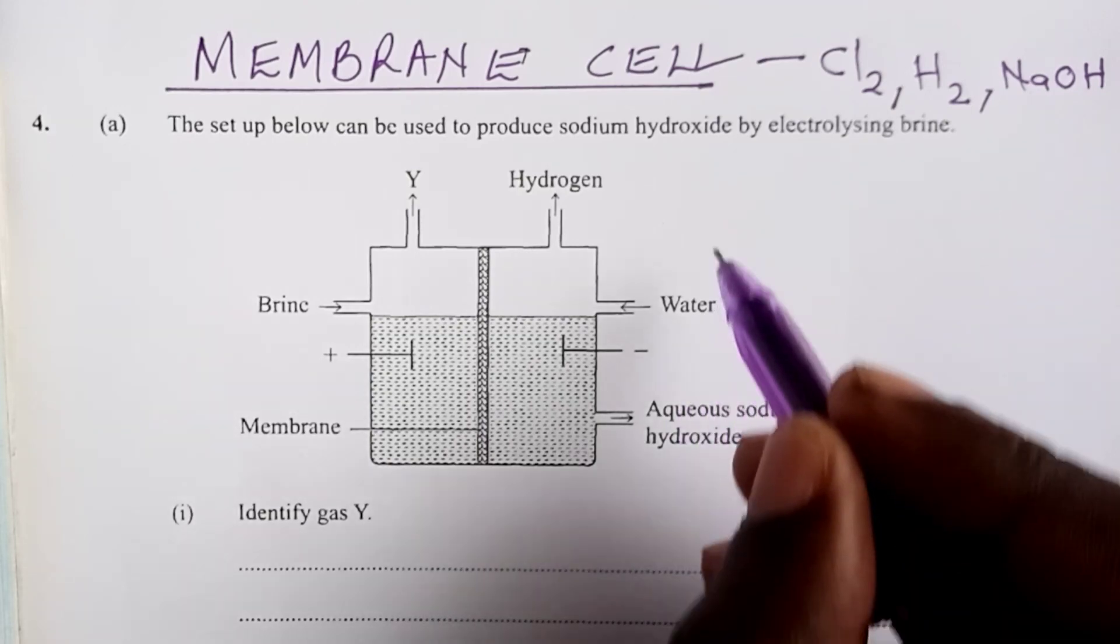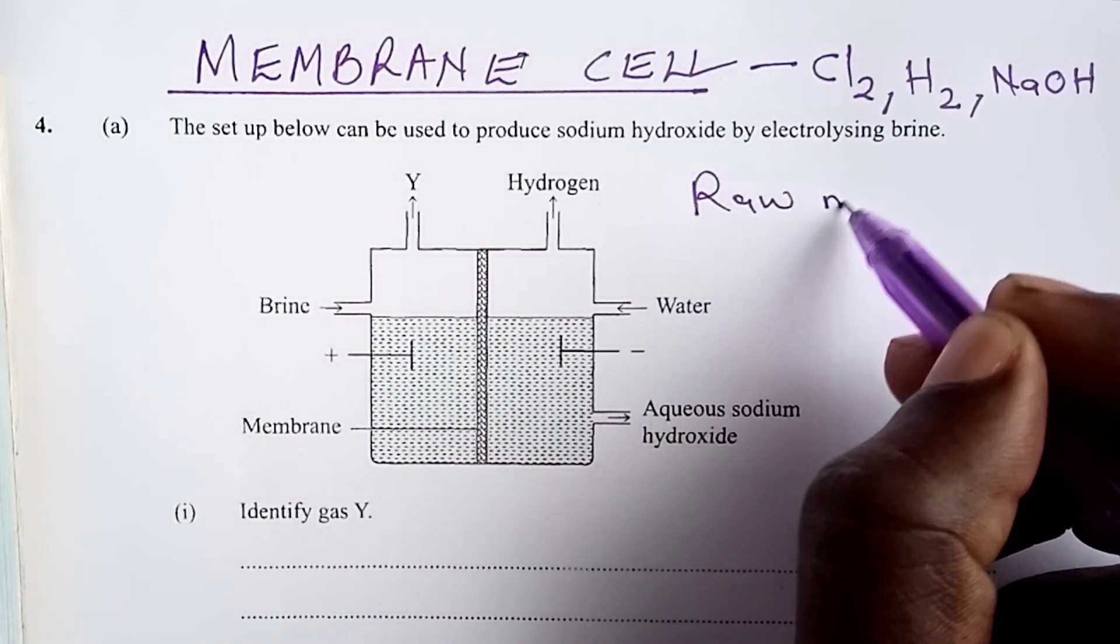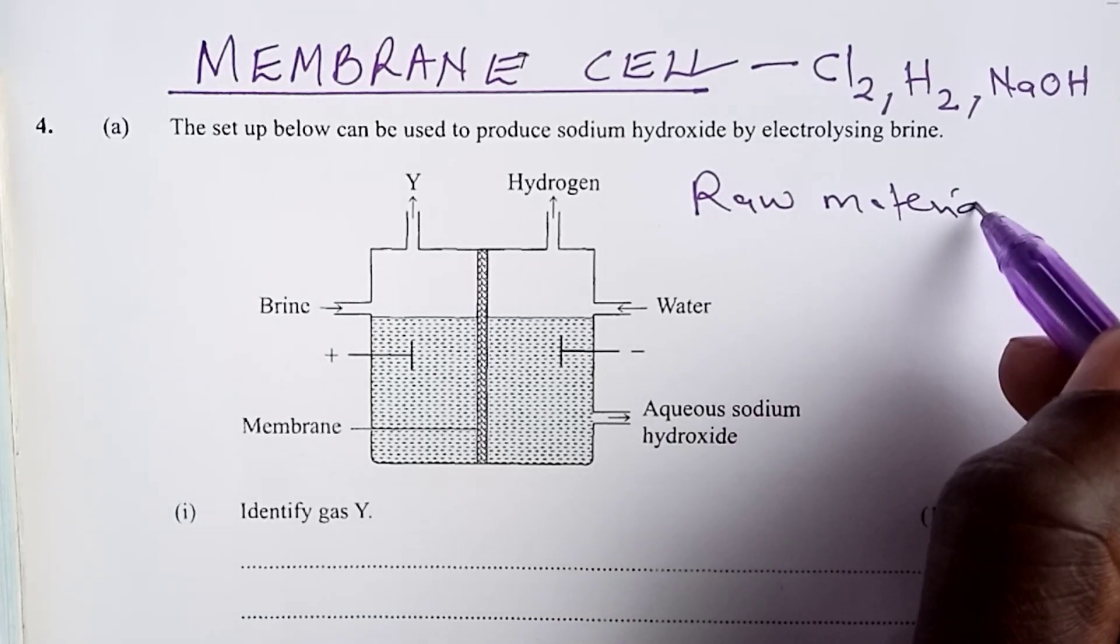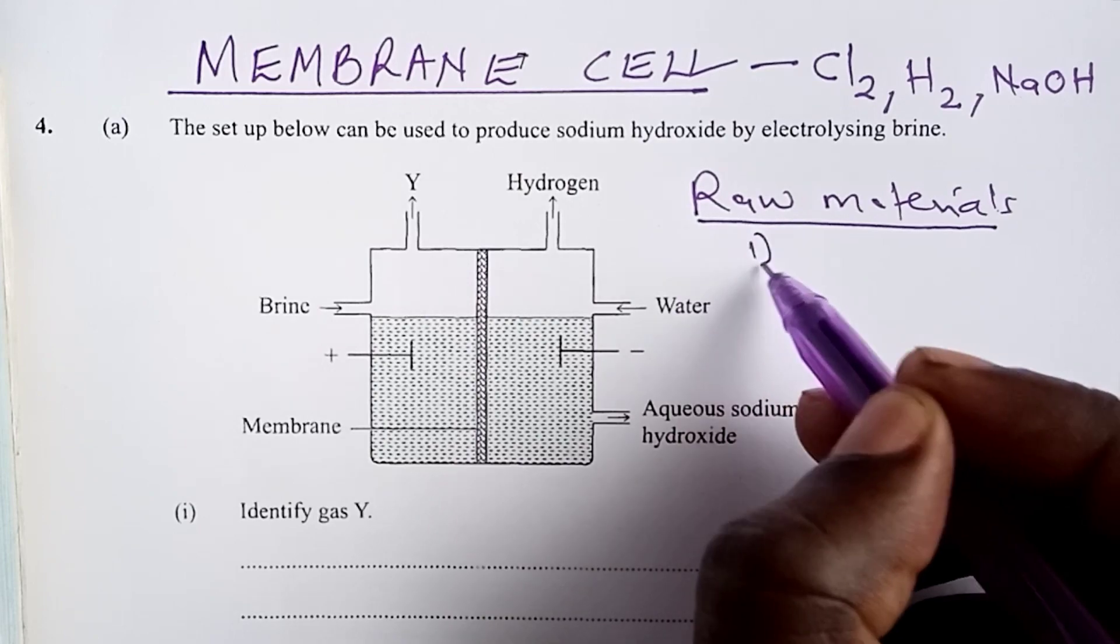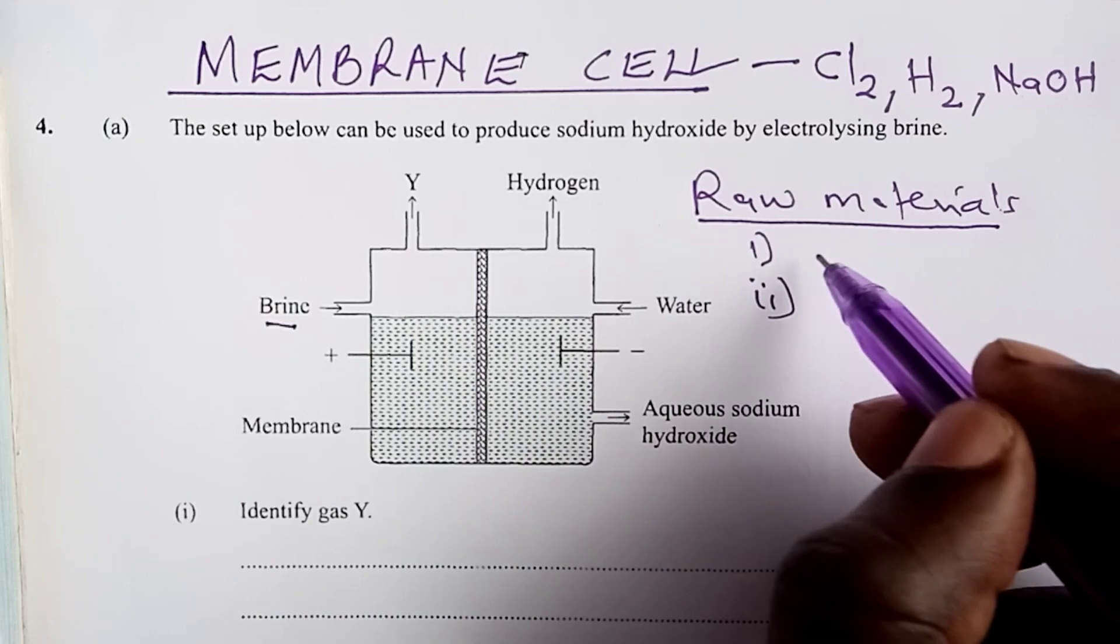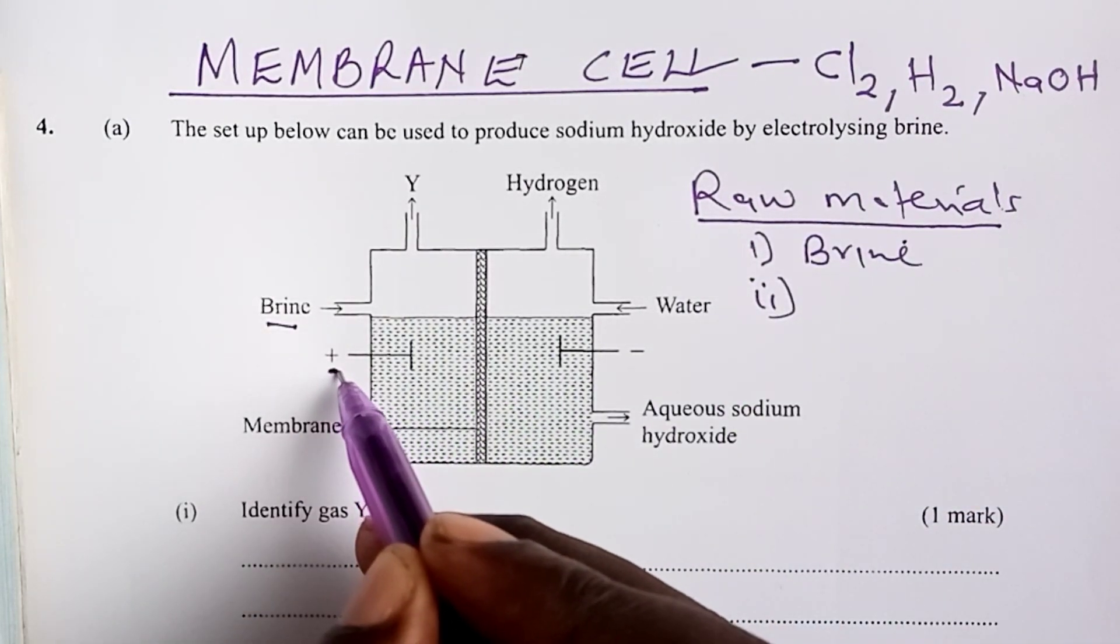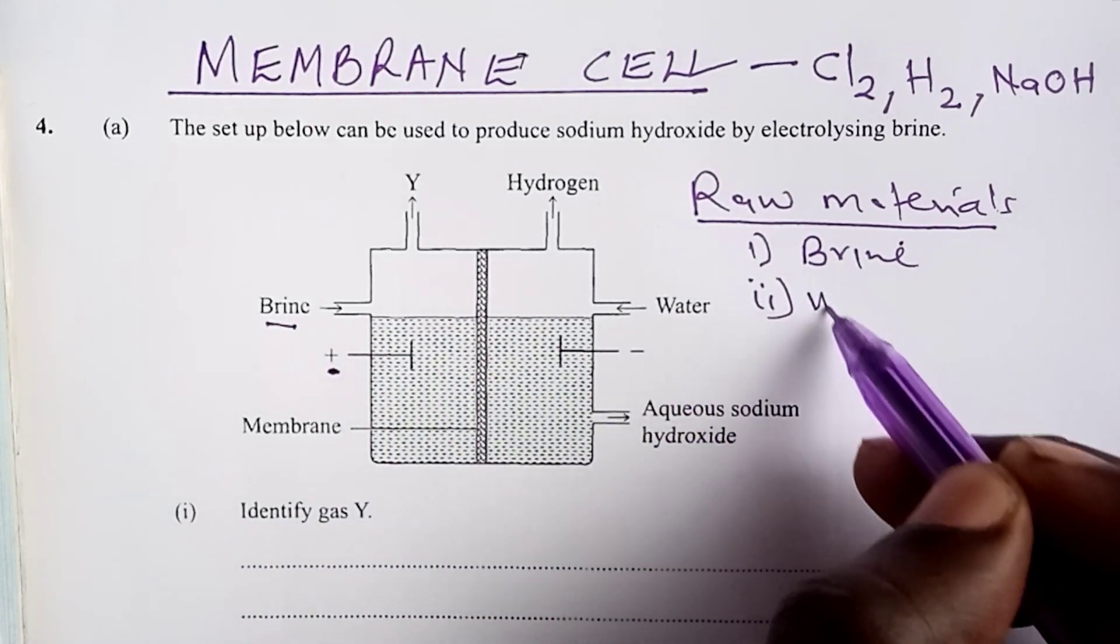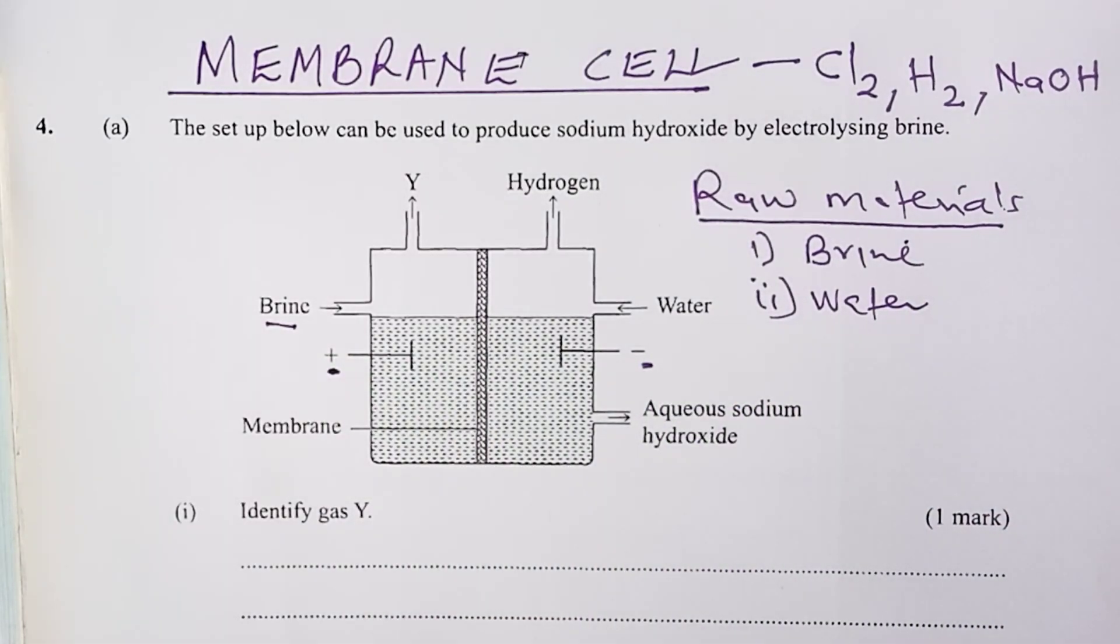So, we shall start with the raw materials, and as we can see from the diagram, the membrane cell utilizes two raw materials. That is brine that comes in from the anode side, and then we have water that comes in from the cathode side.